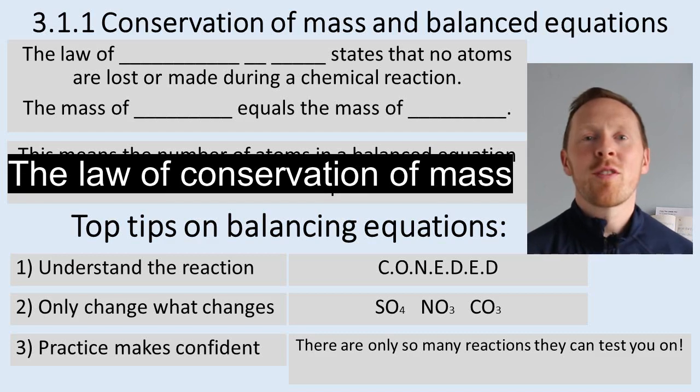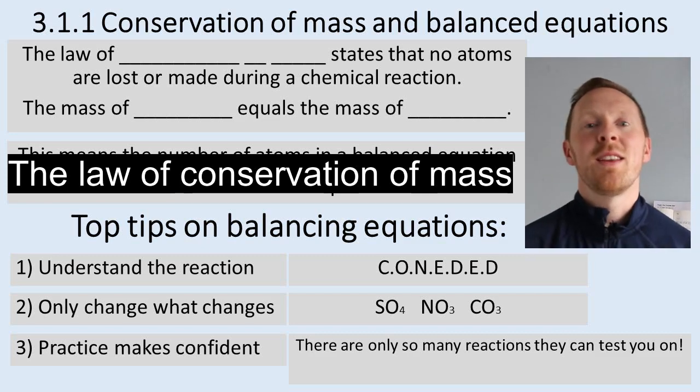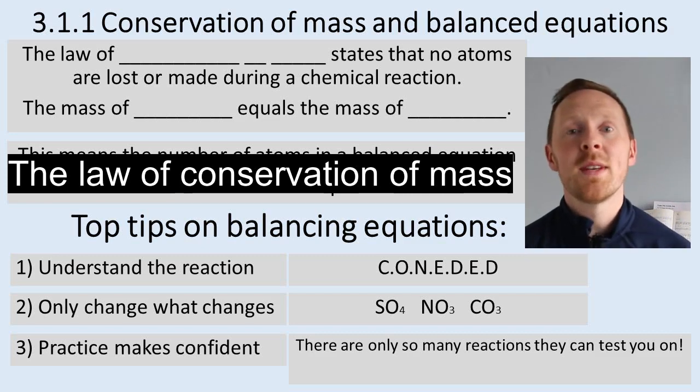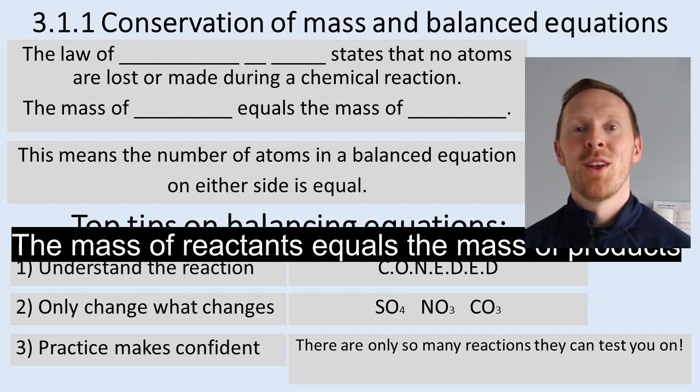The law of conservation of mass states that no atoms are lost or gained during a chemical reaction. That means the mass of the reactants will always equal the mass of the products. So there's the same amount of atoms in the reactant will be found in the products, just arranged in a different type of bond.